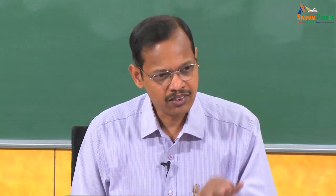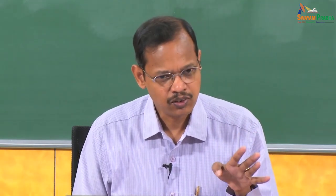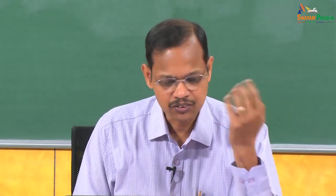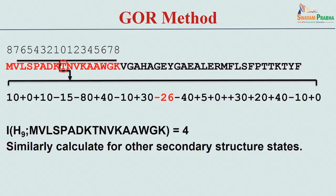They derived 4 matrices in total: one for helix, one for strand, one for turn, and one for coil. Given an amino acid sequence, we use the GOR matrices to obtain information content and predict secondary structures.